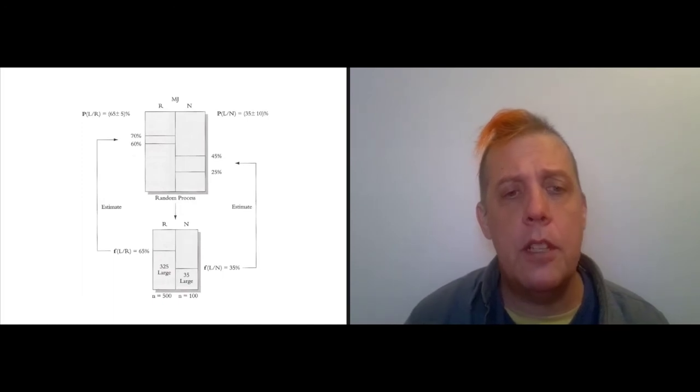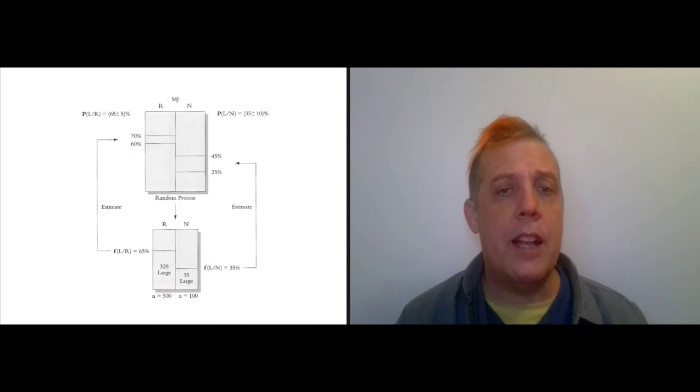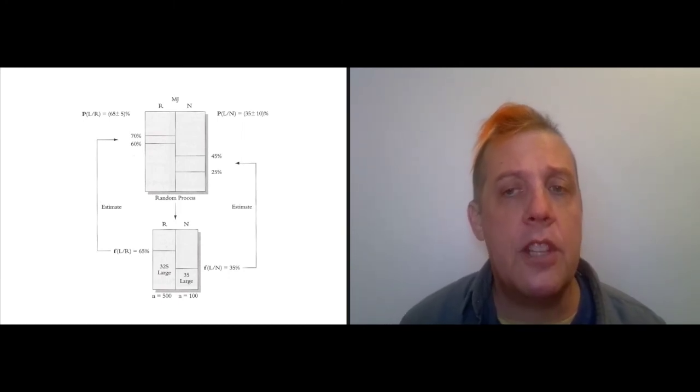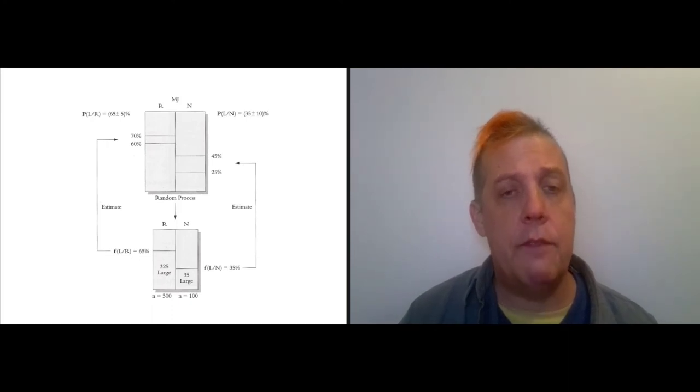If you're dealing with a correlation, you want to put two of these distribution diagrams next to each other. You've got on top the real world, and on the bottom the sample that you have taken from the real world. In this case, he is imagining a standard example. You are pulling balls from an urn, and those balls can be either red or not red, and they can be large or not large.